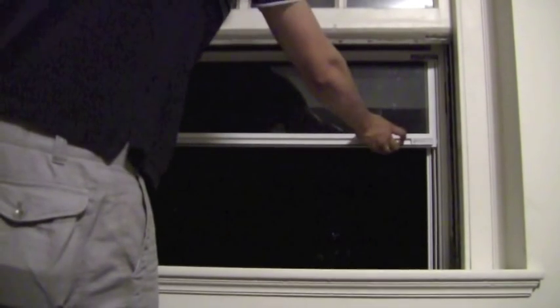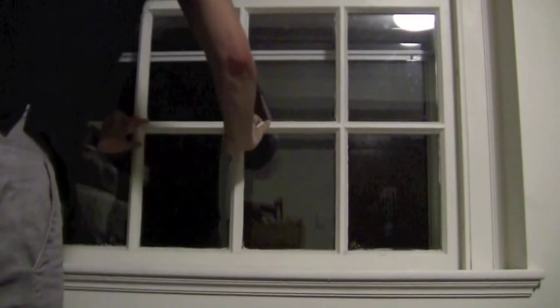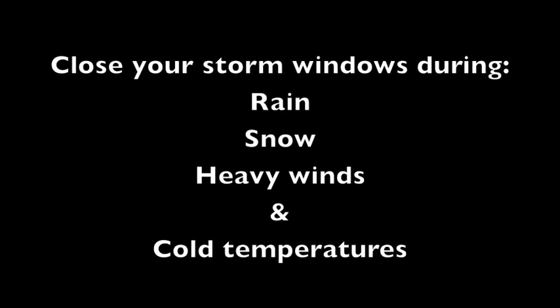Next, unlock the storm window in the same fashion and slide it all the way down. Make sure the tabs lock in place, then slide your window pane down. You can open your storm window again by reversing the process.